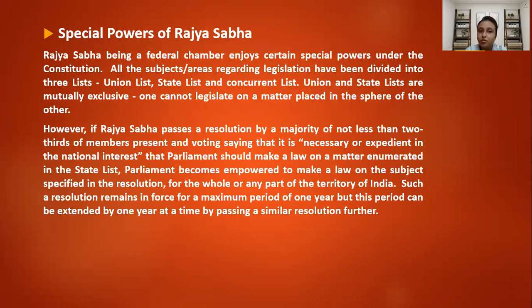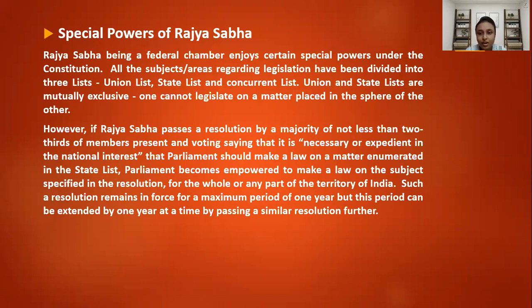So let's start with the special powers of the Rajya Sabha. The Rajya Sabha, being a federal chamber, enjoys certain special powers under the constitution. All the subjects or areas regarding legislation have been divided into three lists: the union list which the centre prepares, the state list which the state prepares, and the concurrent list which both jointly prepare.